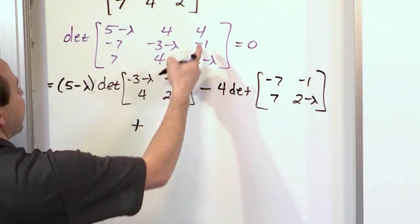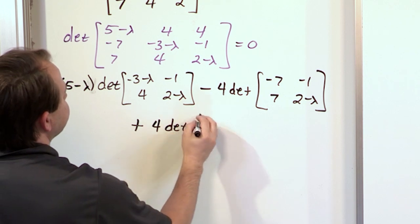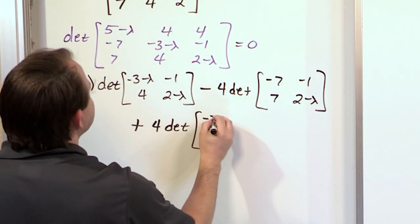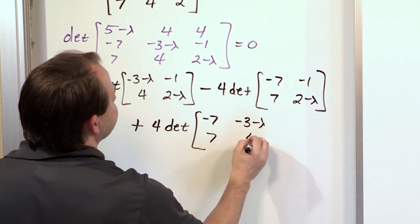And then we have the third term, which is also a 4, times the determinant. If we cross this and this, we're left with this submatrix here: negative 7, negative 3 minus lambda, 7, and 4.